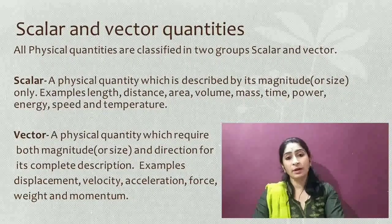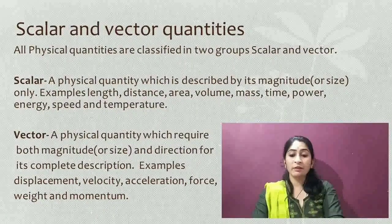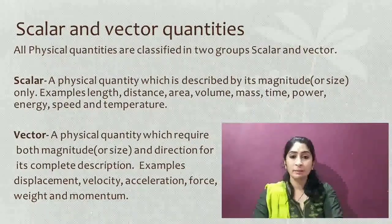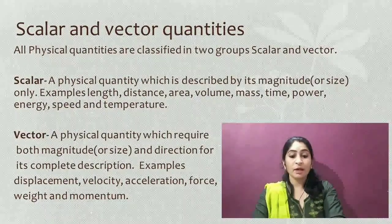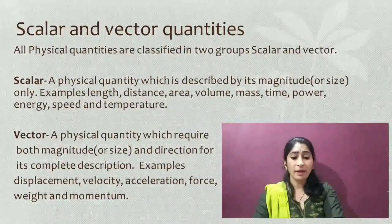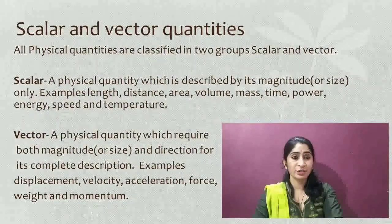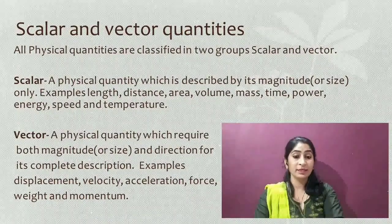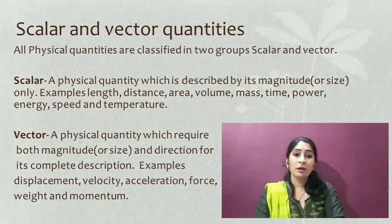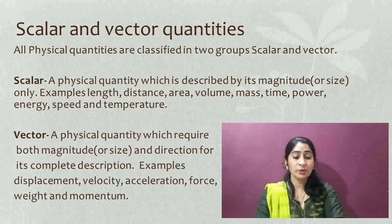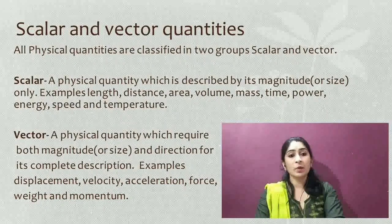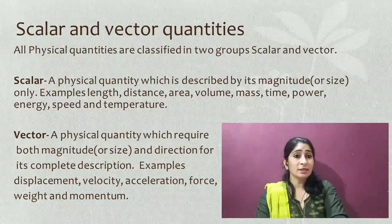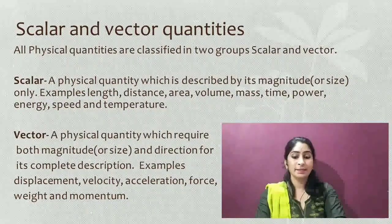The second type is vector quantities. A vector quantity is a physical quantity which requires both magnitude and direction for its complete description. Examples include displacement, velocity, acceleration, force, weight, and momentum. In these quantities, direction is also needed along with magnitude. So these are the examples of vector quantities. Now we will study some of these scalar and vector quantities in detail.